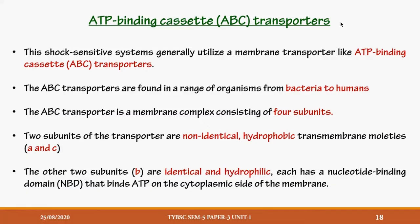Now let's get back to the next concept: ATP binding cassette, which is called as ABC transporter. Questions are often asked regarding what is the full form of ABC transporter. A means ATP, B means Binding, C means Cassette. Remember this — ATP Binding Cassette — because this is going to be a complex containing different subunits, hence it is called a cassette.